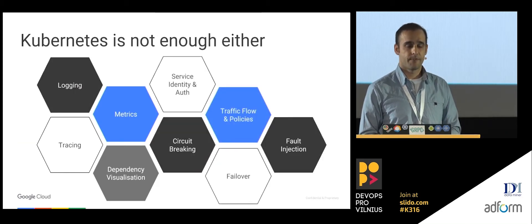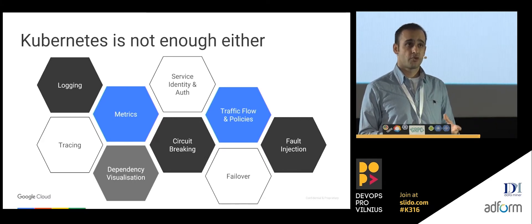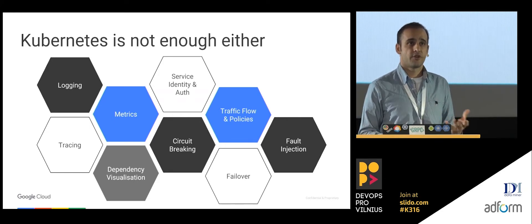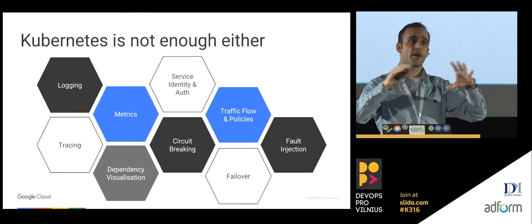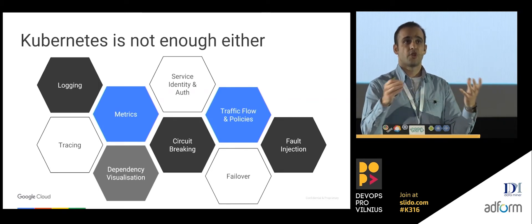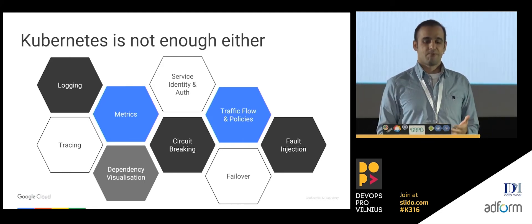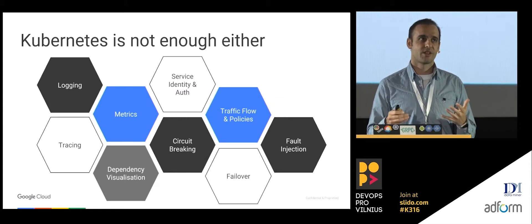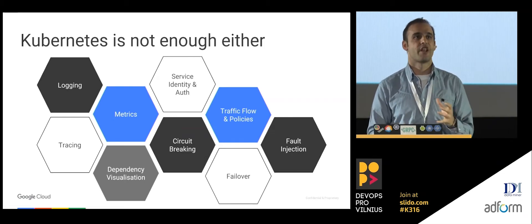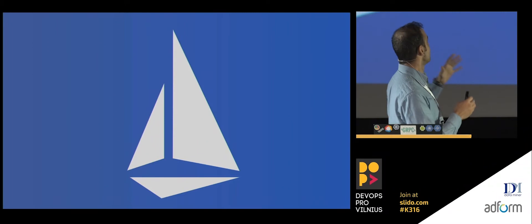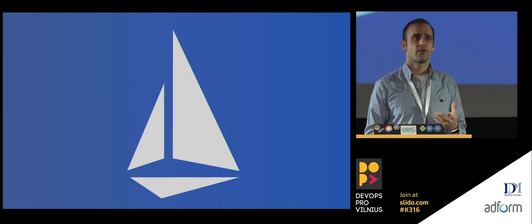But Kubernetes is not enough either. If you want to do logging, Kubernetes doesn't give you a framework for that. If you want to do tracing — like tracing your HTTP calls — Kubernetes doesn't help. If you want dependency visualization, to see how your microservices depend on each other, Kubernetes doesn't help for that either. If you want to do good DevOps and production-level code, you still need to worry about these things. Docker helps a little, Kubernetes helps a little, but it's not enough. That's why we have Istio.